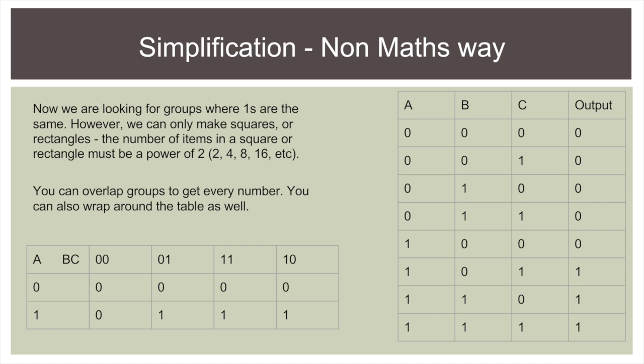And so now what we're looking for are groups where 1s are the same. However, we can only make squares or rectangles. The number of items in a square or rectangle must be a power of 2. So we can have 2 in a group, 4 in a group, 8 in a group, 16 in a group, etc.